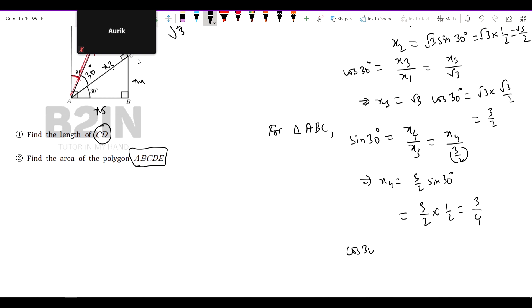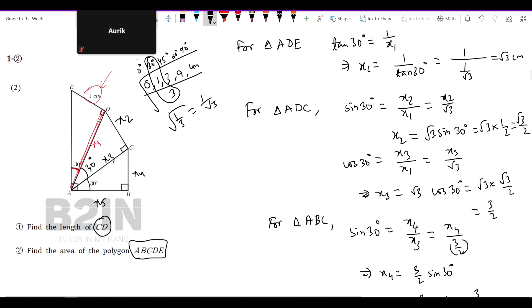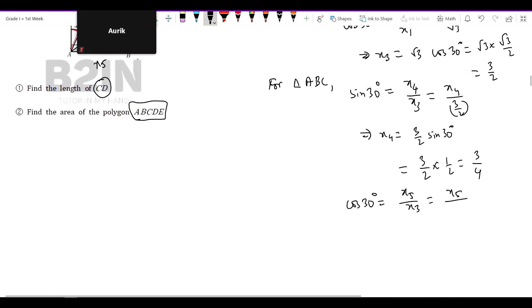And then similarly cos 30, then x5 x3. So x3 is value, x3 values, x3, 3 by 2. X5 equal to 3 by 2 cos 30, equal to 3 by 2 cos 30 value root 3 by 2, 3 root 3 by 4.